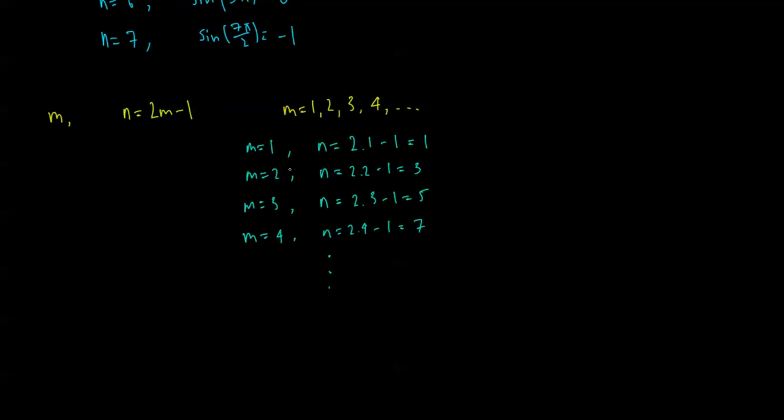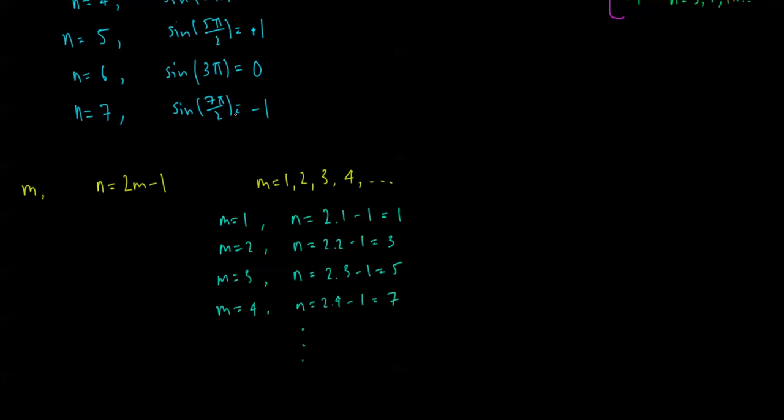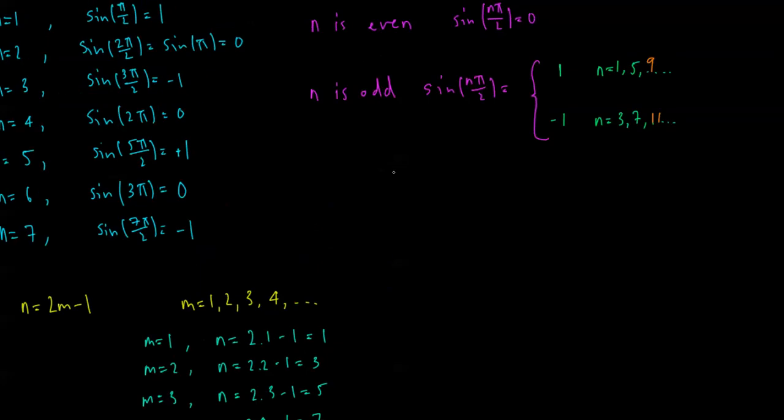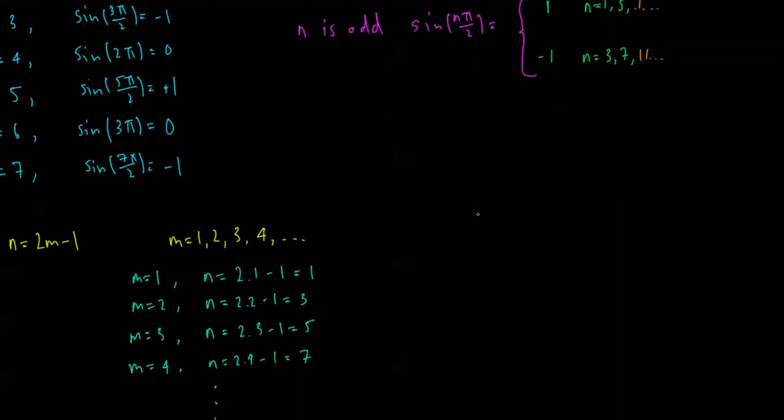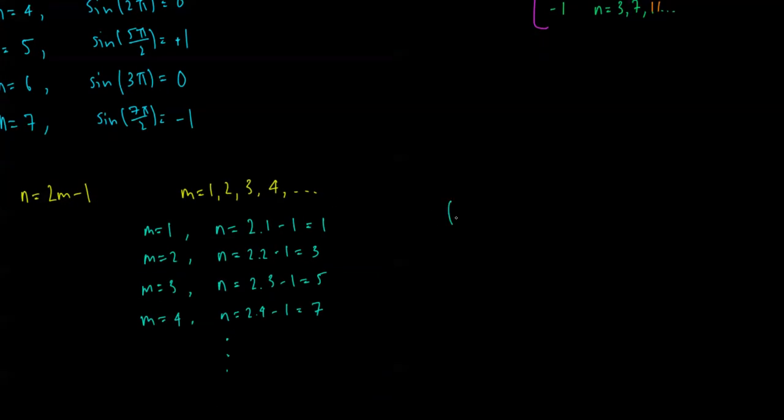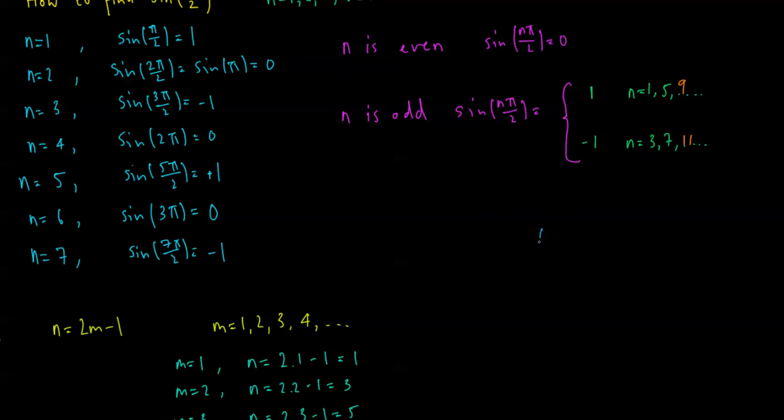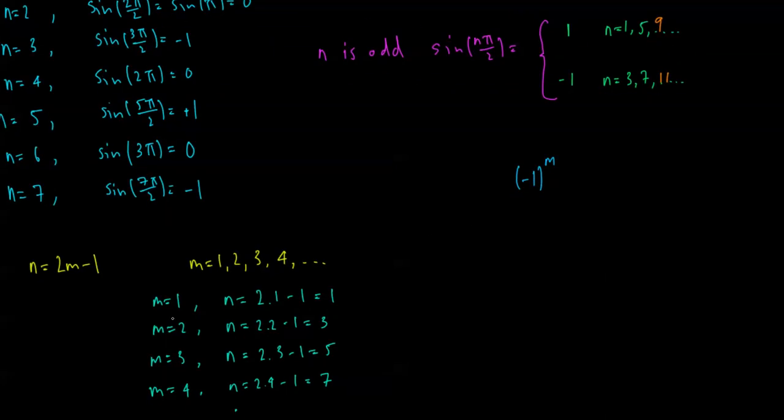So this is really clever, because by letting m go from 1, 2, 3, 4, all the even n's don't exist, i.e. they're equal to 0. And when m is an odd number, 1, 3, 5, etc., n is equal to 1, 5, etc. So now we can get positive 1 when m is odd. So we know that we're going to have to have here, to represent this 1, a negative 1 to the power of something. What's that something going to be? Well, it's going to contain an m, but when m is odd, 1, 3, so n is equal to 1, 5, 9, etc., we need a positive 1. So when m is odd, we need an even number up here, so we're just going to add 1.